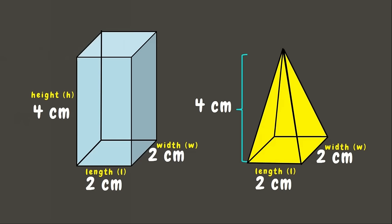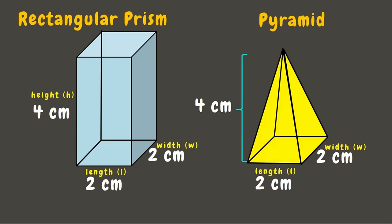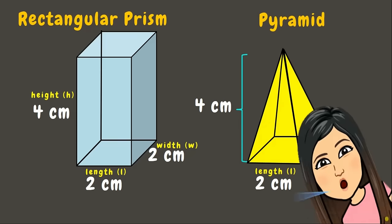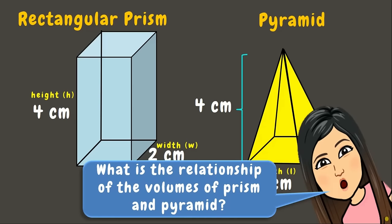Now let's take a look at these two figures. We have a rectangular prism and a pyramid with the same height and base. Let's determine the relationship of the volumes of a prism and pyramid using an experiment. Here the prism and the pyramid have the same height and base.